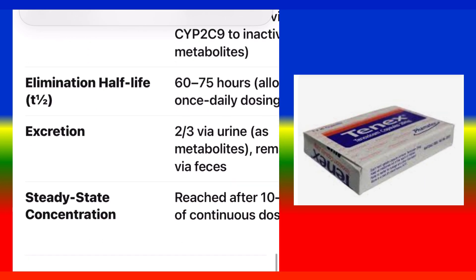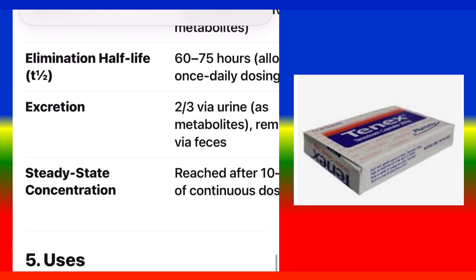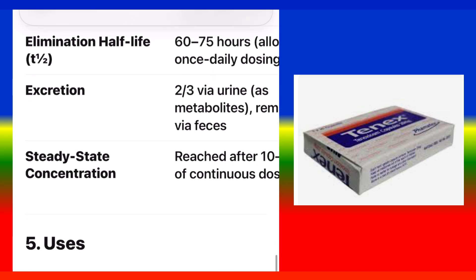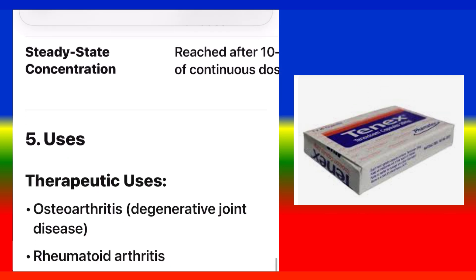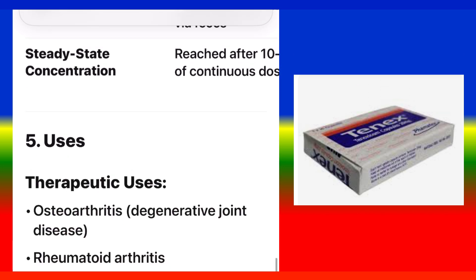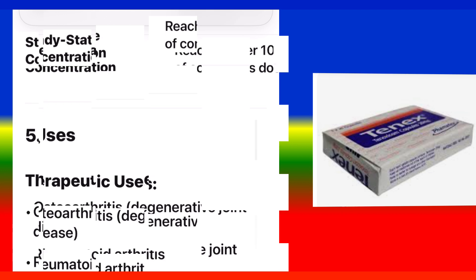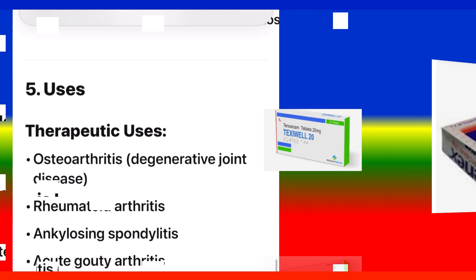Elimination half-life: 60–75 hours, allows once daily dosing. Excretion: two-thirds via urine as metabolites, remainder via feces. Steady-state concentration: reached after 10–15 days of continuous dosing.